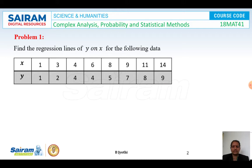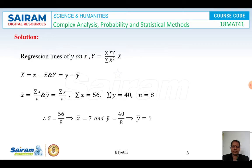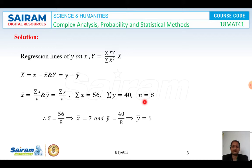We need to find the regression lines of y on x. The regression line of y on x is given by y equal to (sigma XY / sigma X²) times X, where capital X is x minus x̄ and capital Y is y minus ȳ. The mean x̄ = summation x / n = 56 / 8 = 7, and ȳ = 40 / 8 = 5.